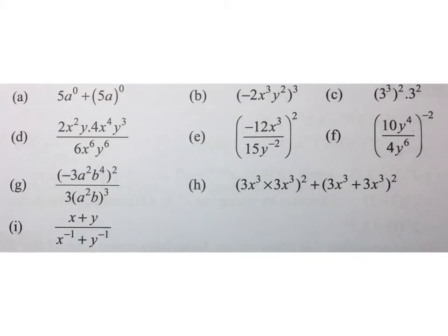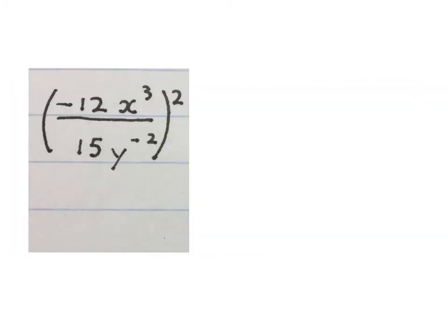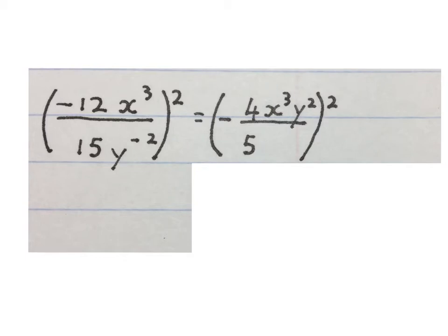The next expression looks like this, and we must simplify. First we simplify inside the bracket: three goes in there four times and three goes in there five times. We move this y to the power of minus 2 to the top to make it positive.